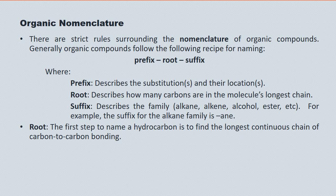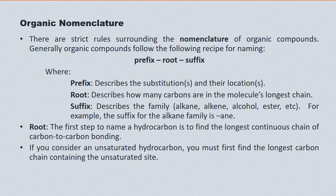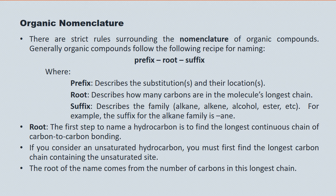The first step in naming a hydrocarbon is to find the root and determine the longest continuous chain of carbon-to-carbon bonding. If you consider an unsaturated hydrocarbon, such as an alkene or an alkyne — and we'll do that in a subsequent lecture — we look for the longest chain of carbon-to-carbon bonding that includes that unsaturated site. The root of the name then comes from the number of carbons found in this longest chain.